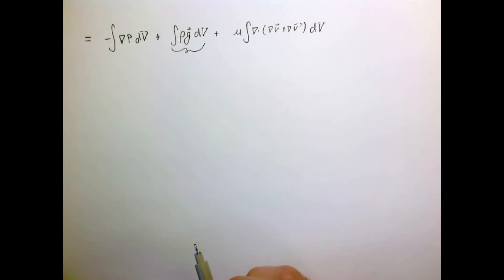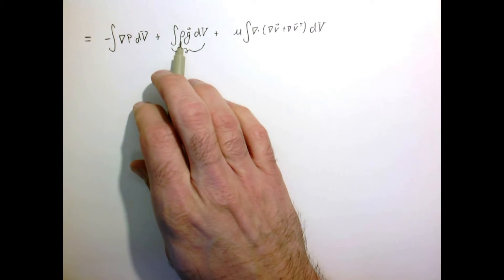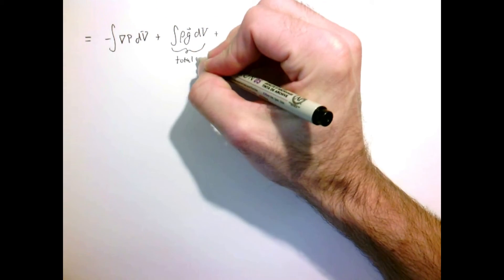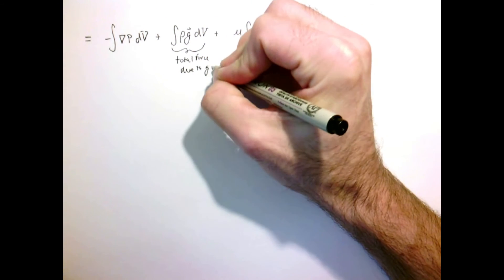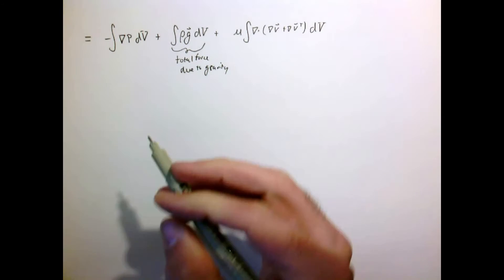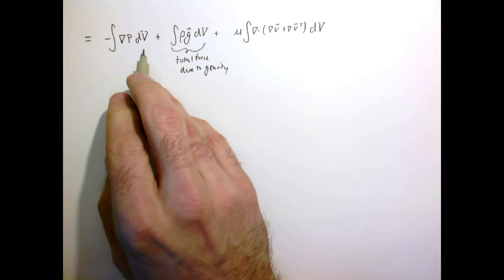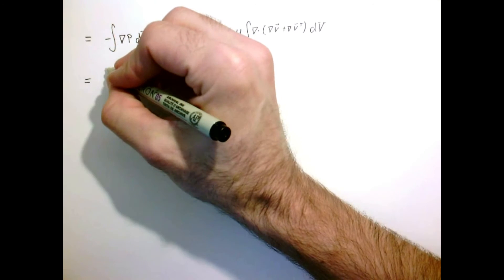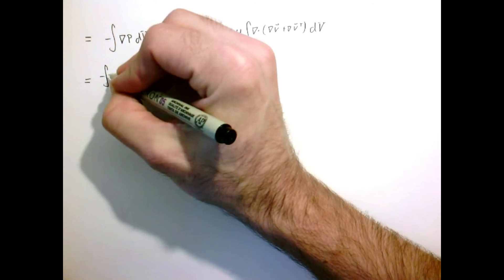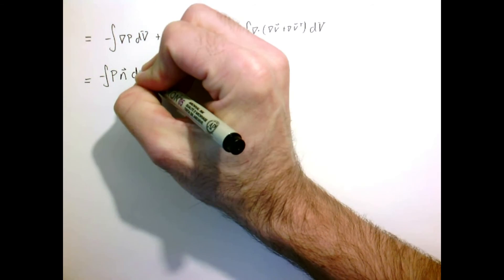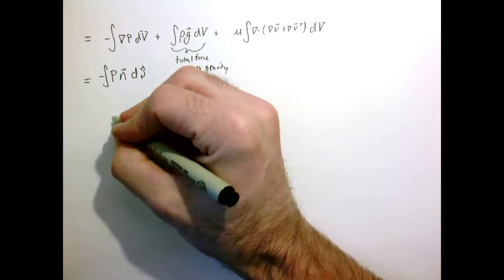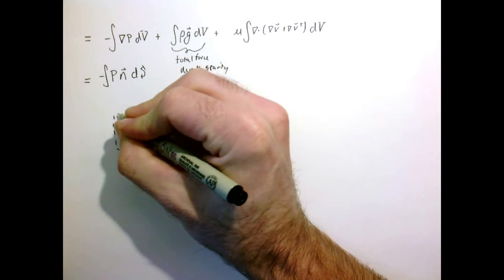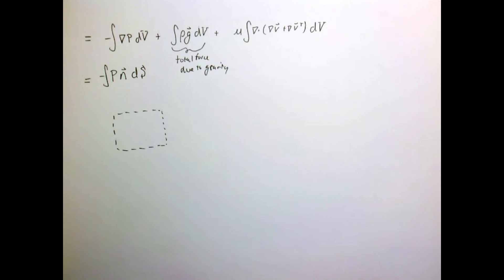The gravity term is relatively simple — it's just the mass density times the gravity vector integrated over the volume, giving us the total force due to gravity. The pressure term we can convert to a surface integral using the divergence theorem, which gives us minus the pressure times the normal vector integrated over dS. We can draw a square control volume to see how the sign works for that term.